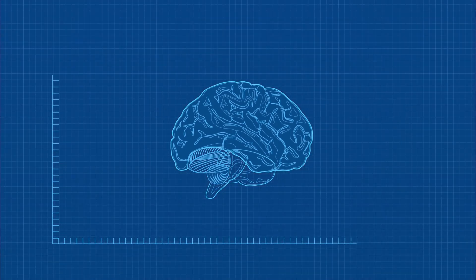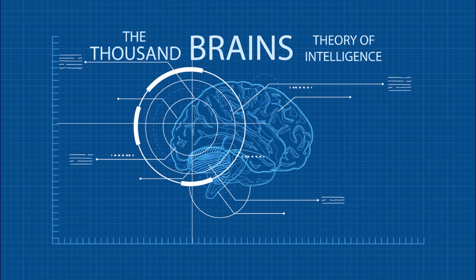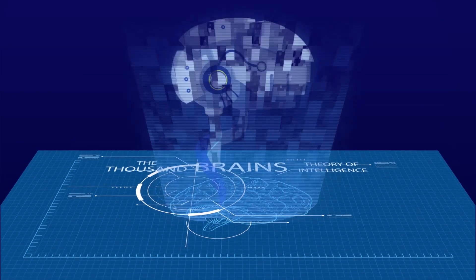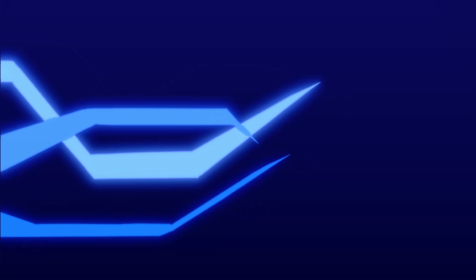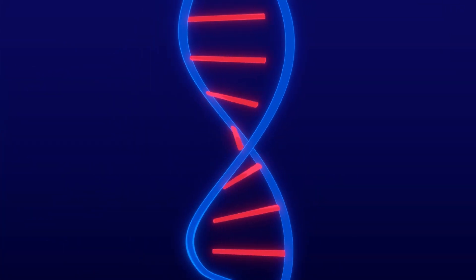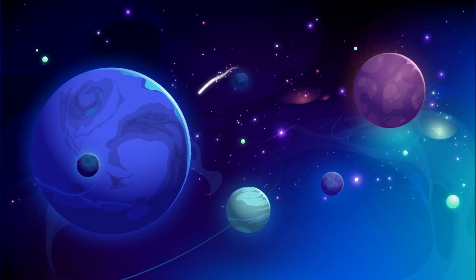The thousand brains theory provides not only an explanation of how our brains work, but also a blueprint for how to build truly intelligent machines. These machines will think faster than we do, sense more than we can, and travel to places that we could not survive.